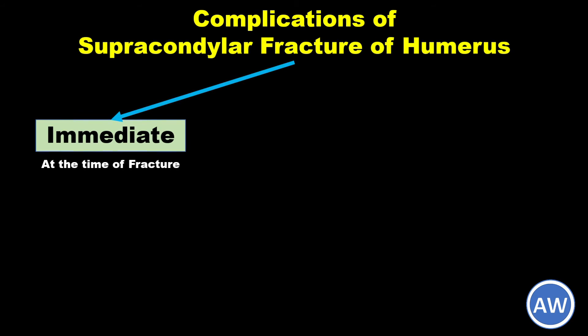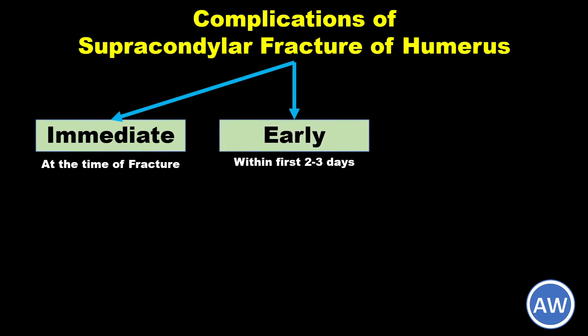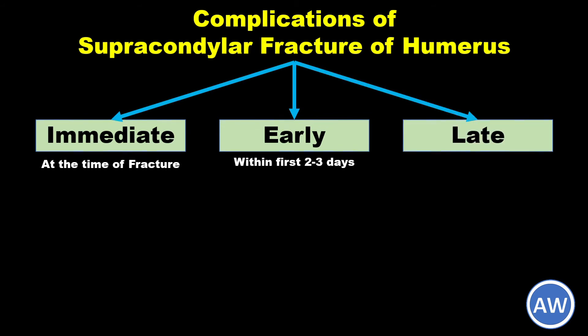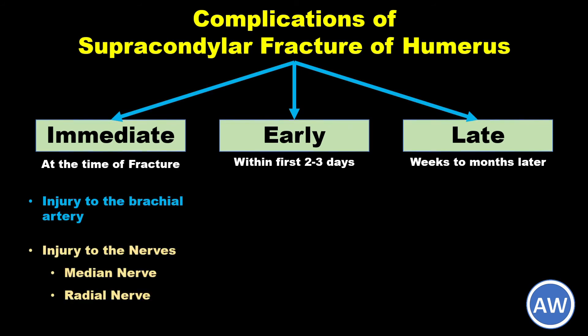The supracondylar fracture is notorious for a number of serious complications. These can be immediate — occurring at the time of fracture — early, occurring within the first two to three days, or late, occurring weeks to months after the fracture. Immediate complications may include injury to the brachial artery, which may be injured by the sharp edge of the proximal fragment, and injury to the nerves, where the median nerve is the most commonly injured. The radial nerve is also sometimes affected. Spontaneous recovery occurs in most cases.